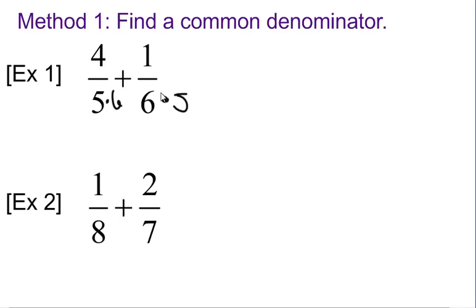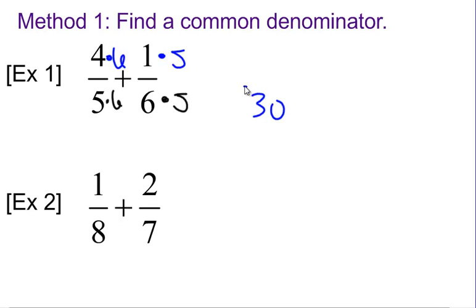Remember, whatever you do to the bottom of the fraction, you have to do to the top — whatever you do to the denominator, you have to do to the numerator. So we multiplied by 6 down here, we have to multiply by 6 up here. We multiplied by 5 down here, we have to multiply by 5 up here. So our denominator is going to be 30, and our numerator — 4 times 6 — is going to be 24.